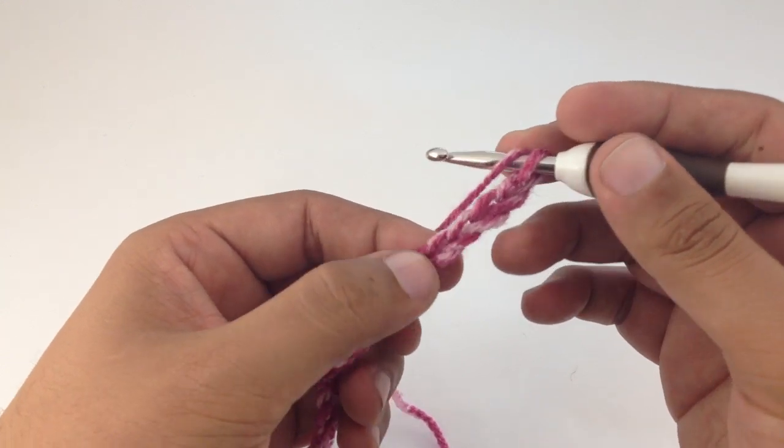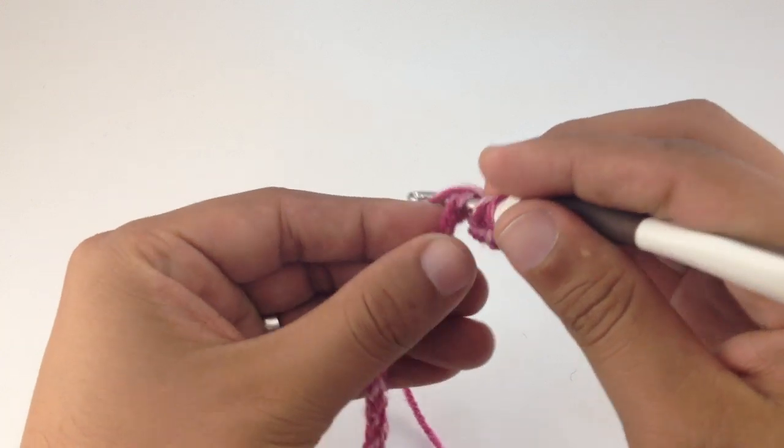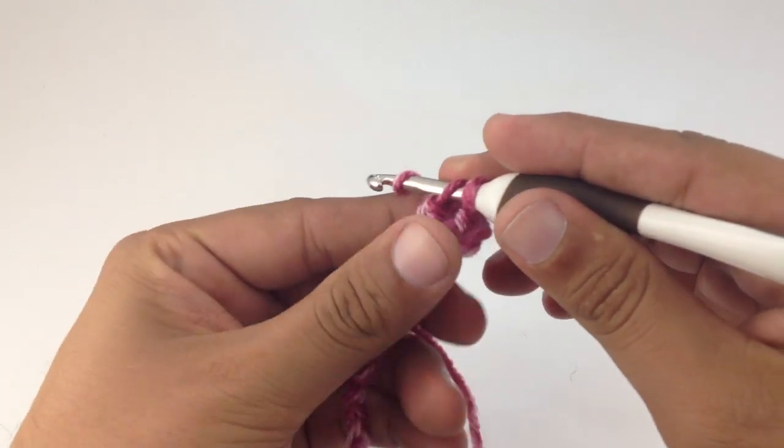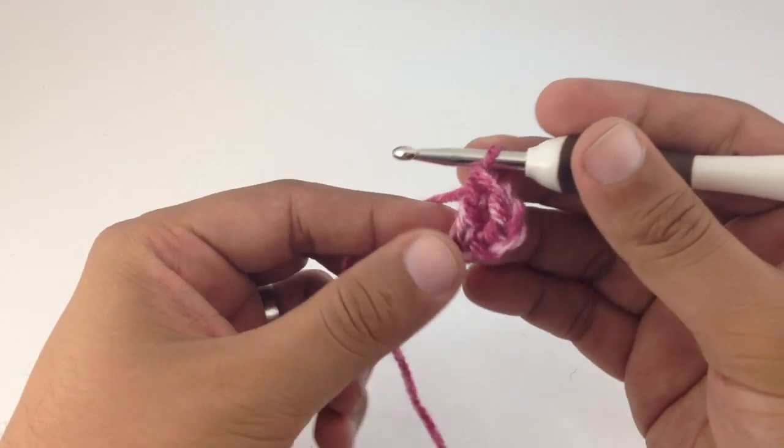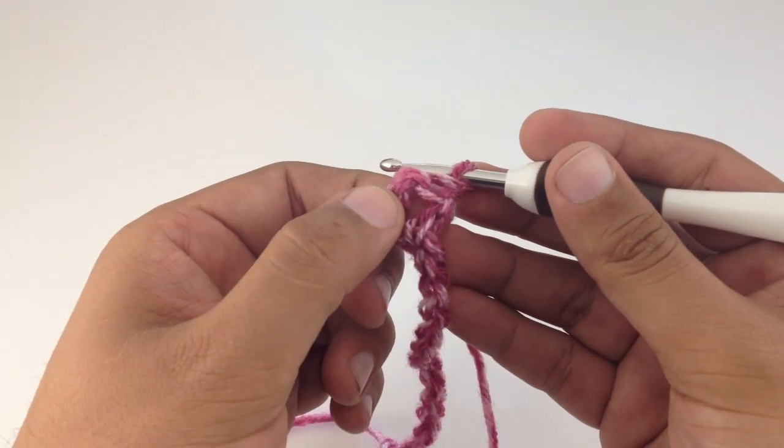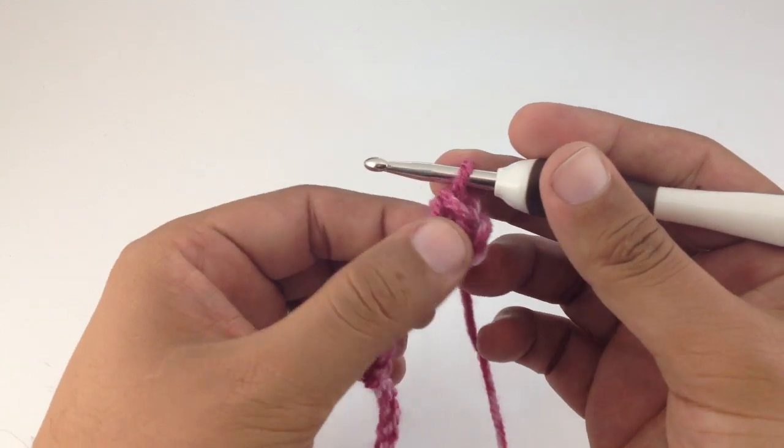So we've got one, two, three, and we're going to go into the fourth chain stitch. Okay, so those three chains that we skipped are going to act as a double crochet, and then we've created another one.